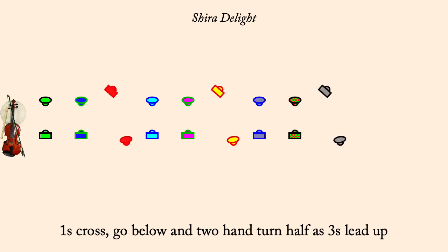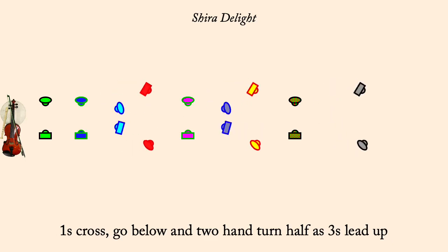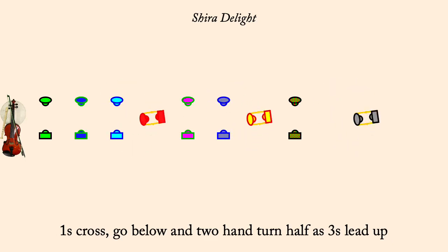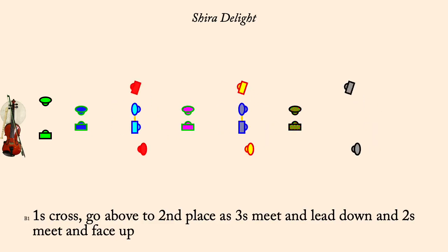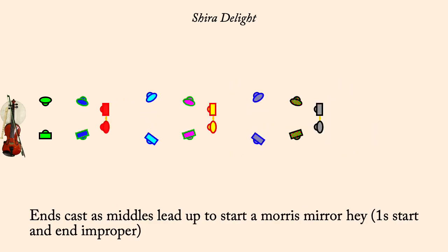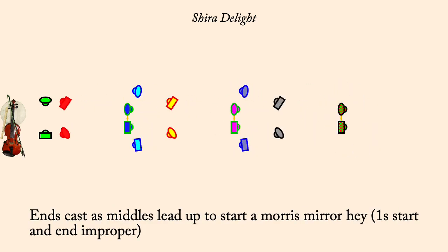Ones cross, go above, as threes lead down. End couple's cast, middle leads up, into a Morris mirror hay.